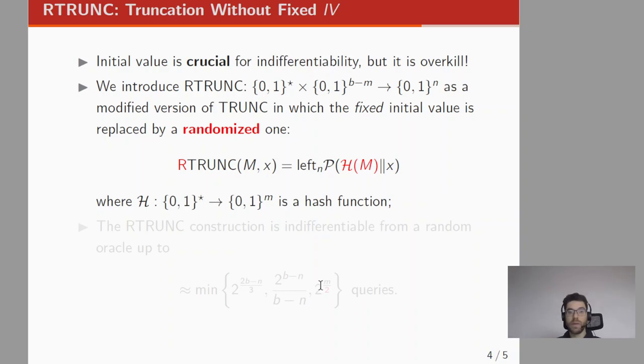This is exactly what we do in this paper. We introduce RTRUNC, a modified version of TRUNC in which the fixed initial value is replaced with a randomized one. RTRUNC takes an input M and x defined as follows: we apply the hash function H to M, concatenate the output with the other input x, apply the permutation P, and then truncate.